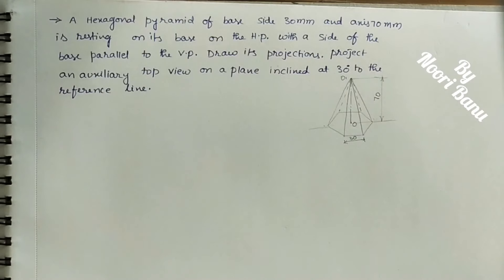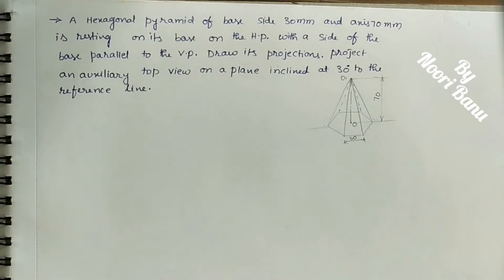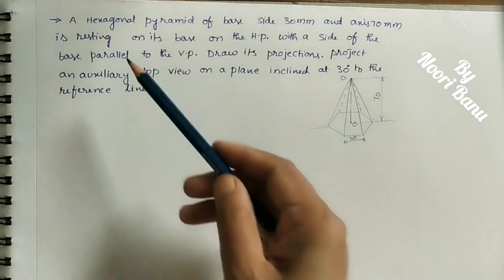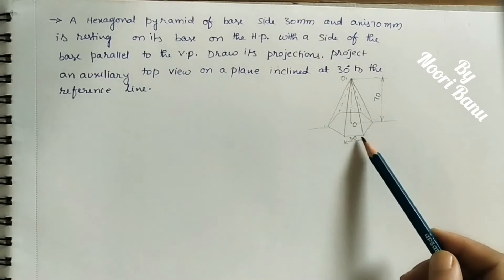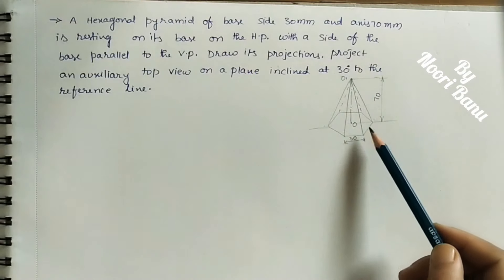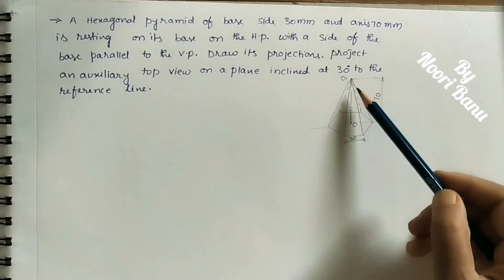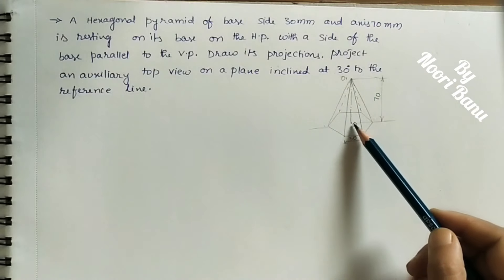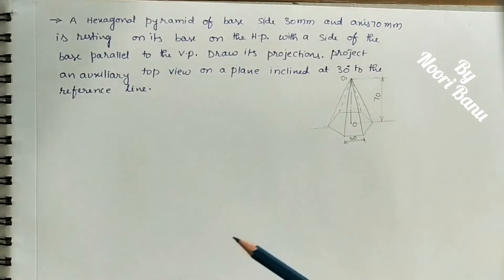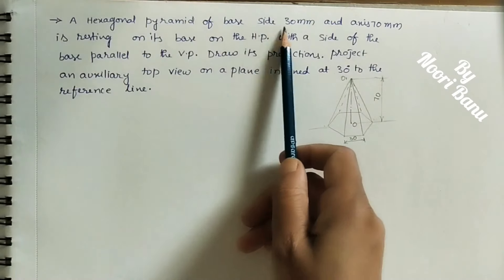Welcome to my channel. In today's class, let us discuss how to do the auxiliary view of a given solid. The given solid is a hexagonal pyramid. As we know, in the hexagonal pyramid the base is a hexagon with all sides of equal length, and this base is connected with the apex. We are taking the apex as O1 and O is the center of this hexagon.